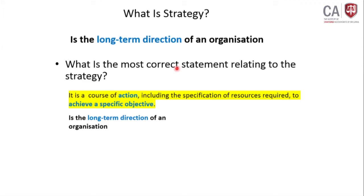What does long-term direction mean? If it is a one-year period, that is not reliable. If it is a five-year period that we are going to plan, that can be strategic planning established within a 5-year duration. Strategy talks about a minimum of 5 years duration. If your organization has a strategy plan, it will have a minimum of 5 years duration.